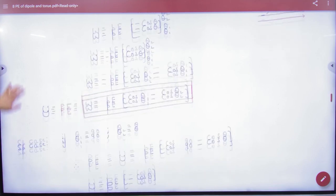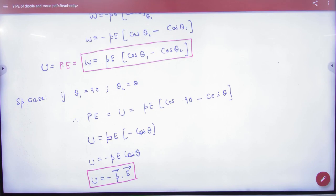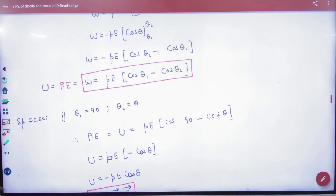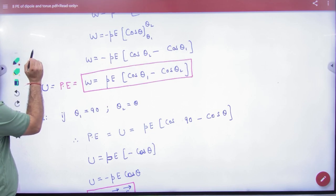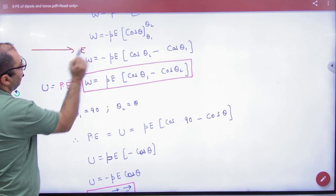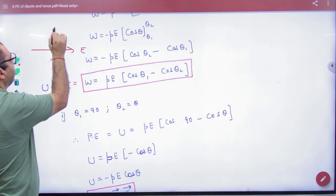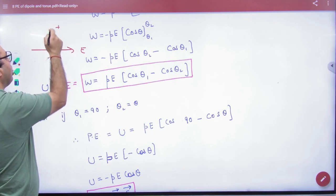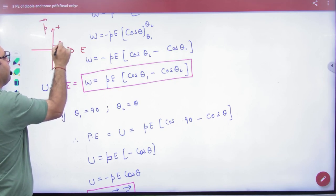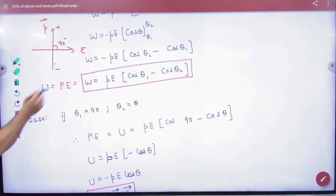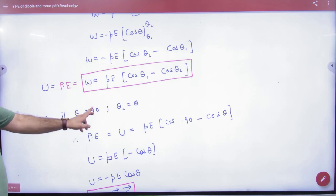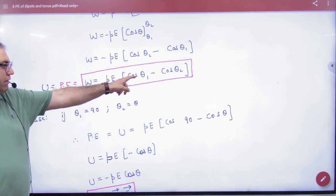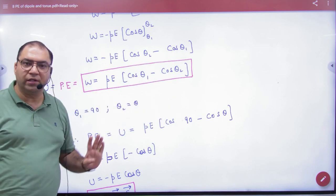This is a special case. If you look at the initial angle of dipole 90, you understand 90? 90 means that this is your electric field and this is your dipole. Such that where is the P vector? What is the angle of P vector? 90. And you have to rotate it to theta. So you have theta1 as 90, theta2 as theta.